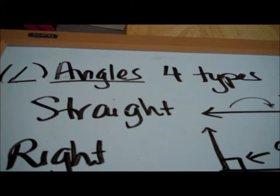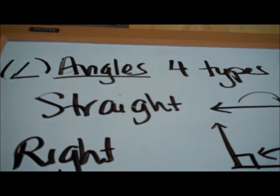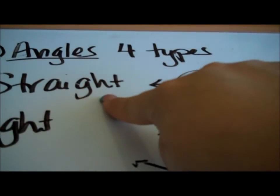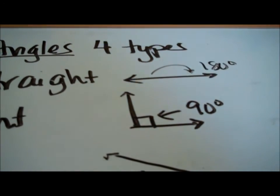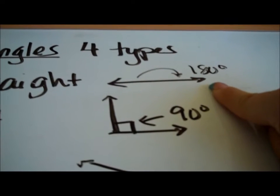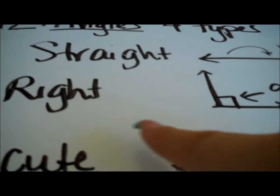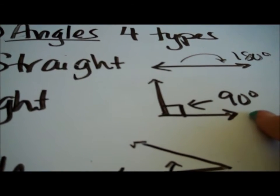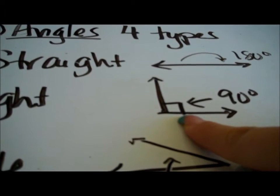Now a little geometry review for the last two problems. There are four different types of angles — this notation we use for angle looks like a less-than symbol but with a flatter bottom. We have a straight angle, which is just a straight line — think of a recliner that reclines all the way back — that's 180 degrees. A right angle forms 90 degrees; we use a little box in the corner to signify a right angle.